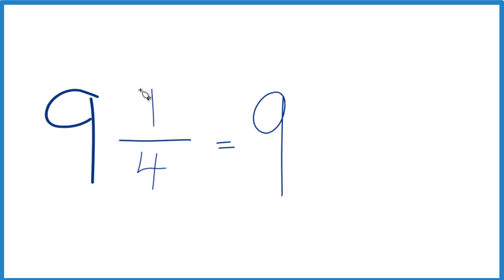So you might know that 1/4 is the same as 0.25. And if you know that, you're done. The fraction 9 and 1/4 equals the decimal 9.25.